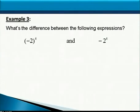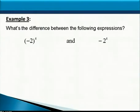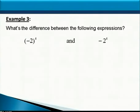When you look at the expression that has parentheses, the parentheses is telling you that you need to raise negative 2 to the fourth power. When you look at the expression without parentheses, this one is telling you that you're only going to raise the positive 2 to the fourth power, and then you're still going to have a negative sign in front of whatever that result is. Let's look at these step by step.